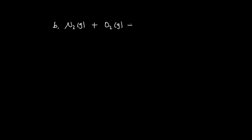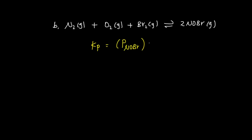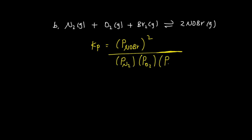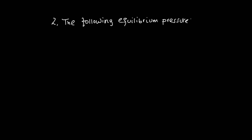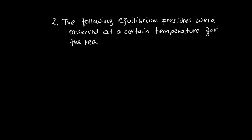For the reaction where N2, O2, and Br2 react to form NOBr, the Kp expression is: partial pressure of NOBr to the power of 2, divided by partial pressure of N2 times partial pressure of O2 times partial pressure of Br2.